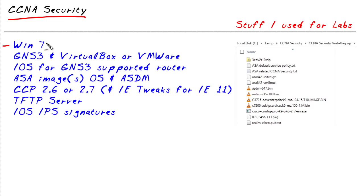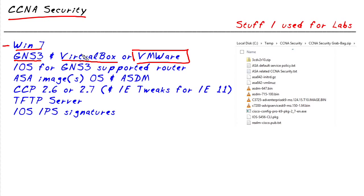I'd start off with a host running Windows 7. Windows 8 can be used, however it causes additional problems and grief that you have to work through, so if you have a host running Windows 7 that's a great place to start. You'd also want to download and install GNS3 and VirtualBox. If you have a license for VMware you can use VMware Workstation, however VirtualBox is free, so you can emulate virtual machines inside of your virtual environment.